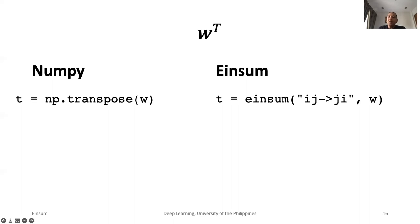Another common matrix operation is transpose. We show the implementation for both NumPy and EinSum.